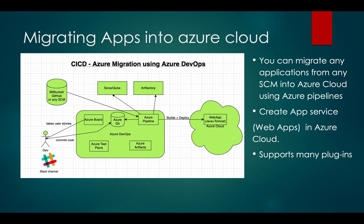If you've decided to migrate your application into Azure cloud, you need to create something called a Web App. A Web App is a Platform as a Service capability — an App Service where you can deploy any kind of application. That's how you can migrate apps into Azure cloud.